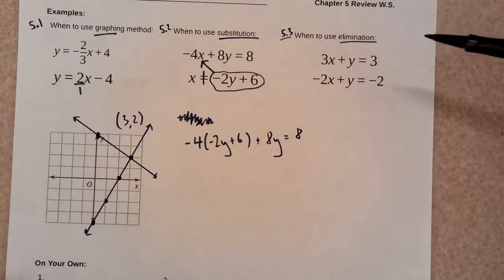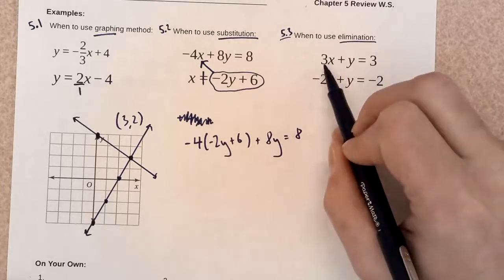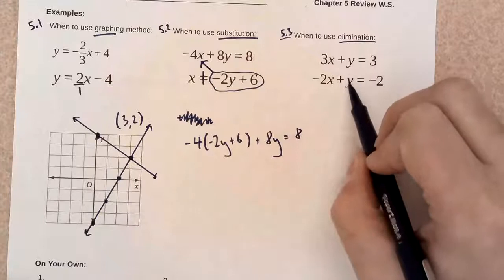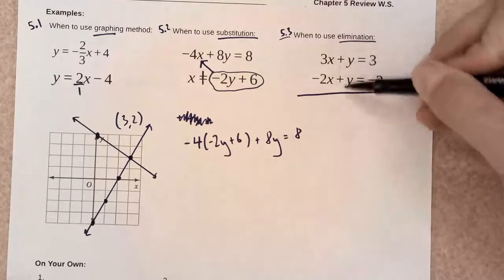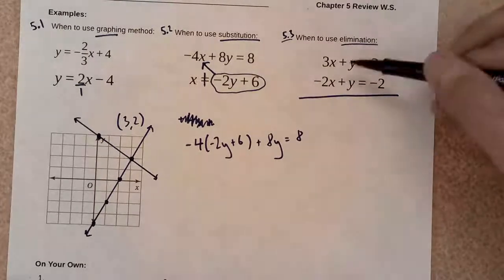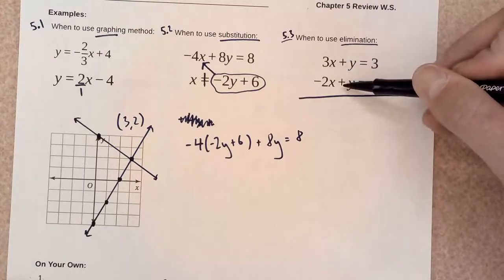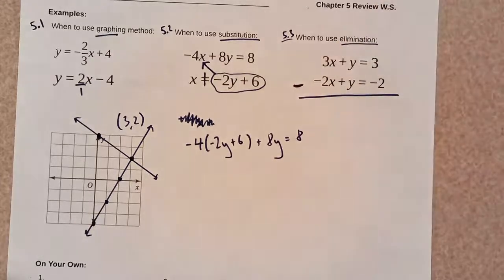And basically, the trick is, I want to find the variable term that's the same. So, 3 and 2 are not the same. But 1y and 1y are the same. And because they're exactly the same, they're both positive, I want to use subtraction. If one of them was positive and one of them was negative, I'd want to use addition. But they're both positive, so I need to subtract these equations.